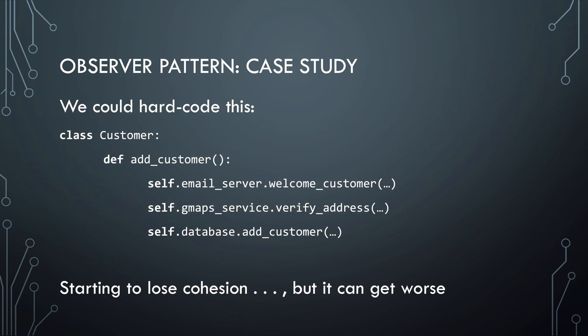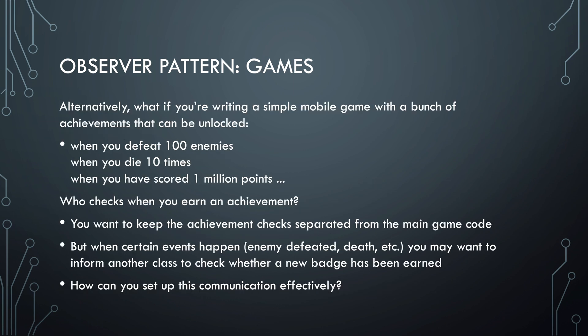A naive solution would be to just hard code everything in the customer class. But now we're starting to lose cohesion and this gets worse every time we want to extend the functionality. Another example: in a game context, suppose you write a mobile game that has all kinds of achievements. Who checks when you earn an achievement? You probably want to keep that separate from the main game code, but you still want to inform another part of your code that something happened — you killed an enemy or you collected items.